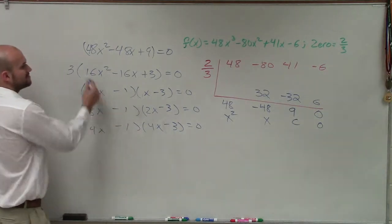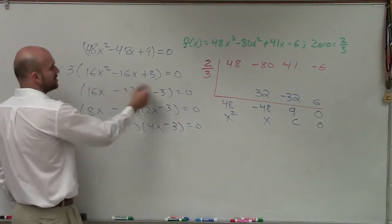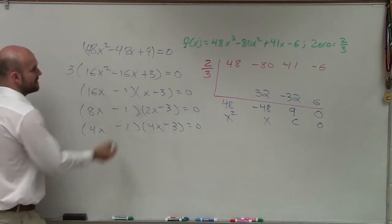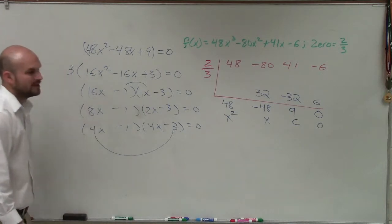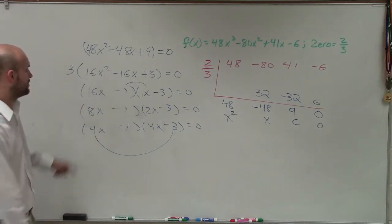By applying these, I know when I multiply my first two terms, I'm always going to get 16x squared. And when I multiply my last two terms, I'm always going to get positive 3. But which one of these, when I multiply the inner and the outer, am I going to get negative 16x?